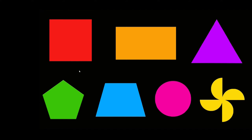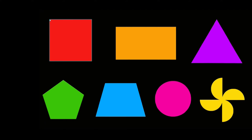A regular polygon is just a shape where all the sides and angles are the exact same. So as you can see on this square, all four sides are the exact same length, and all four vertices — or corners or angles, whatever you want to call them — are the exact same angle. These are all 90-degree angles.